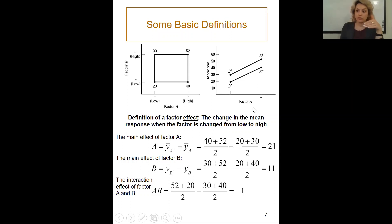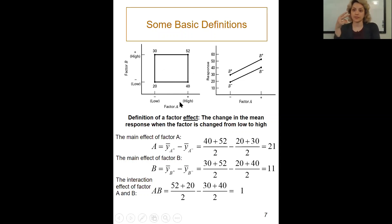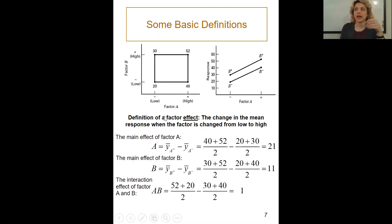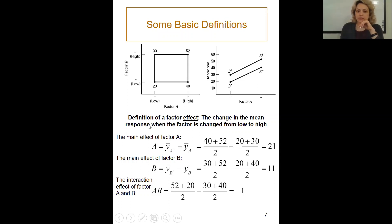Think about what happens if we had three factors, four factors, or five or six factors. Right now it's two-dimensional — Factor A and Factor B — but the shape is going to change with more factors. We would also need to define something new like nested factors, and we'll talk about that later.